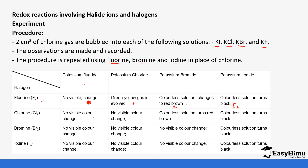For chlorine reacting with potassium fluoride, there is no reaction — you'll see why shortly. With potassium bromide, chlorine produces a red-brown gas of bromine. With potassium iodide, the solution turns black because of iodine. Bromine shows no change with potassium fluoride or potassium chloride, but reacts with potassium iodide to produce a black solution. Iodine shows no change in potassium fluoride, potassium chloride, or potassium bromide. When iodine is added to potassium iodide the solution is black already, so essentially there is no reaction but the solution remains black.